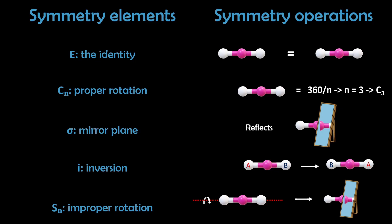Mirror plane reflects across a mirror plane. For example, X, Y, and Z becomes X, negative Y, Z. Inversion inverts all coordinates through the origin. So X, Y, and Z become negative X, negative Y, and negative Z.